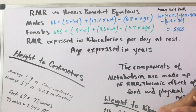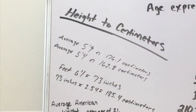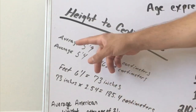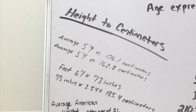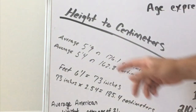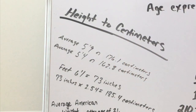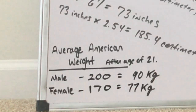First you need to figure out your height in centimeters. The average American man is 5'9" and the average woman is 5'4", or 176 and 162 centimeters. For an average American man we have 90 kilograms, and for the female 77 kilograms.